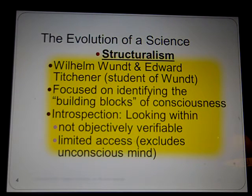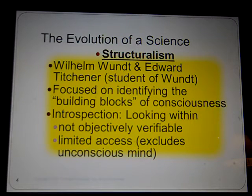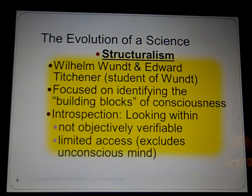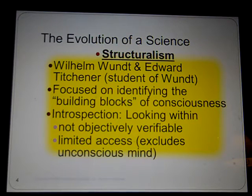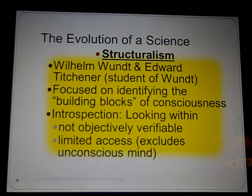The way that we identify these elements of conscious experience is through a process called introspection. Introspection literally translates to 'look within' or 'look inside of.' We all become introspective at times — sometimes we make a mistake and think, maybe I could have done things a little differently. That's being introspective. It's not objectively verifiable; in other words, we can't really prove thought processes. That's one of the problems with this theory.